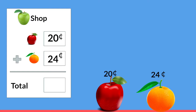When we're adding two-digit numbers together we start by adding the ones place. Here in the ones place there is a zero and a four. Well, zero plus four is pretty easy — it's four. Then we take a look at the tens place. In the tens place we have a two and another two. Two plus two is four. Twenty cents plus twenty-four cents is forty-four cents. Well done!